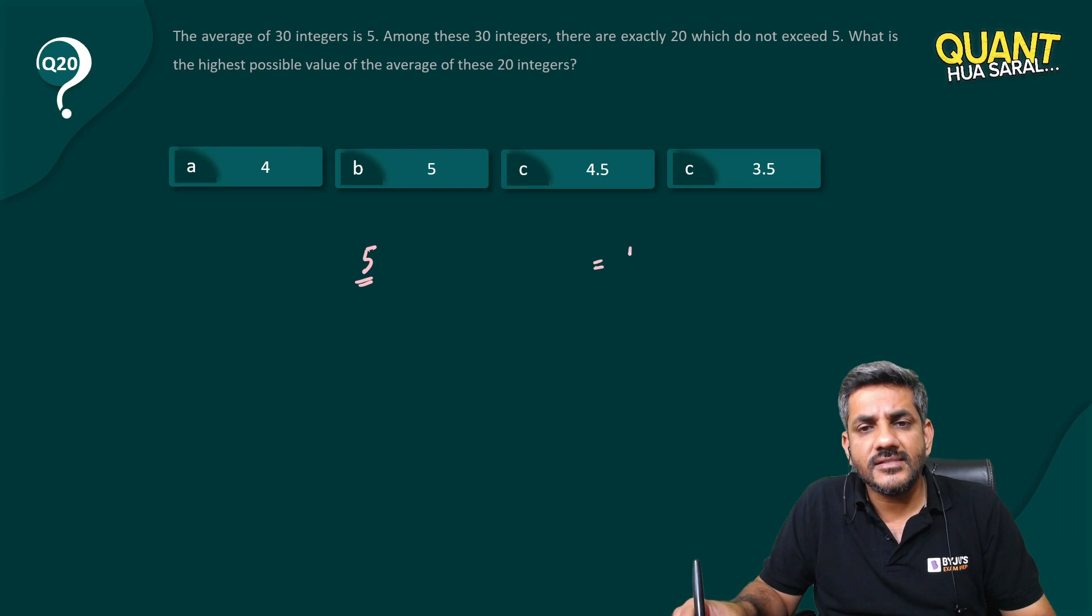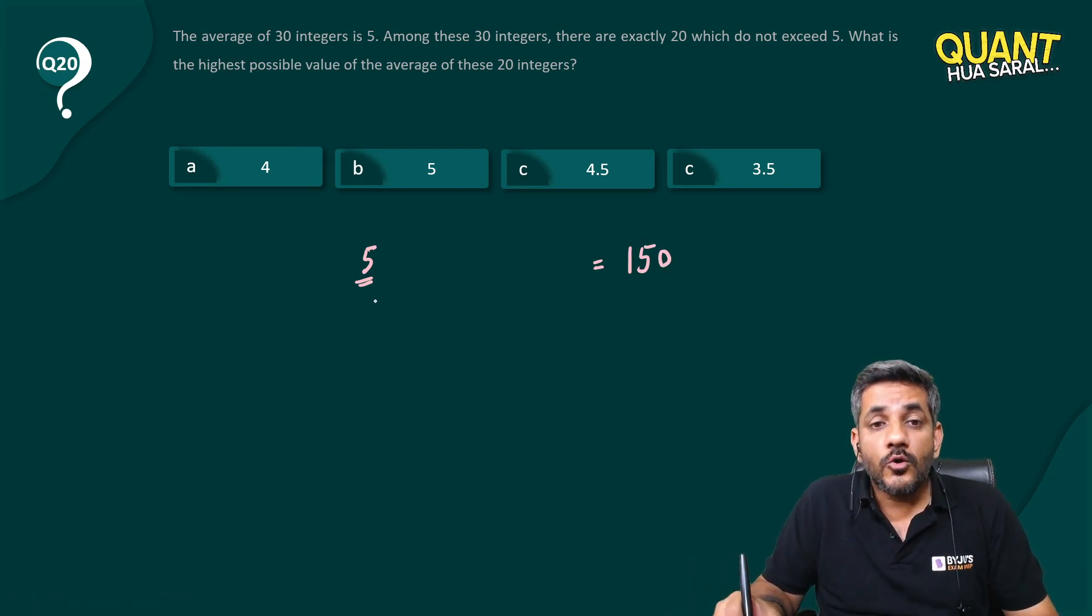Now first of all, when the average of 30 numbers is 5, can I surely say their sum is equal to 30 into 5, which is equal to 150?